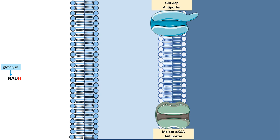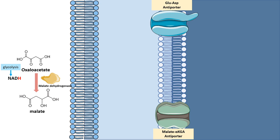The NADH would be converted to a form which can pass through these transporters. Since it is a malate-alpha-ketoglutarate transporter, NADH would be used to generate malate. In the cytoplasm there is quite a lot of oxaloacetate, which would be converted to malate with the help of the enzyme malate dehydrogenase. NADH would be utilized by that enzyme, converting NAD⁺, so the energy in the NADH is effectively stored in the form of malate.